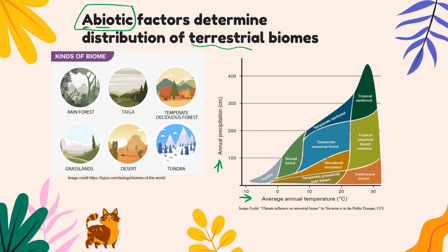On this graph, we have some deserts when it's very hot and very low precipitation, whereas we're going to have tropical rainforests where there's lots of precipitation and lots of heat. Here are the six main terrestrial biomes that we are going to look at.